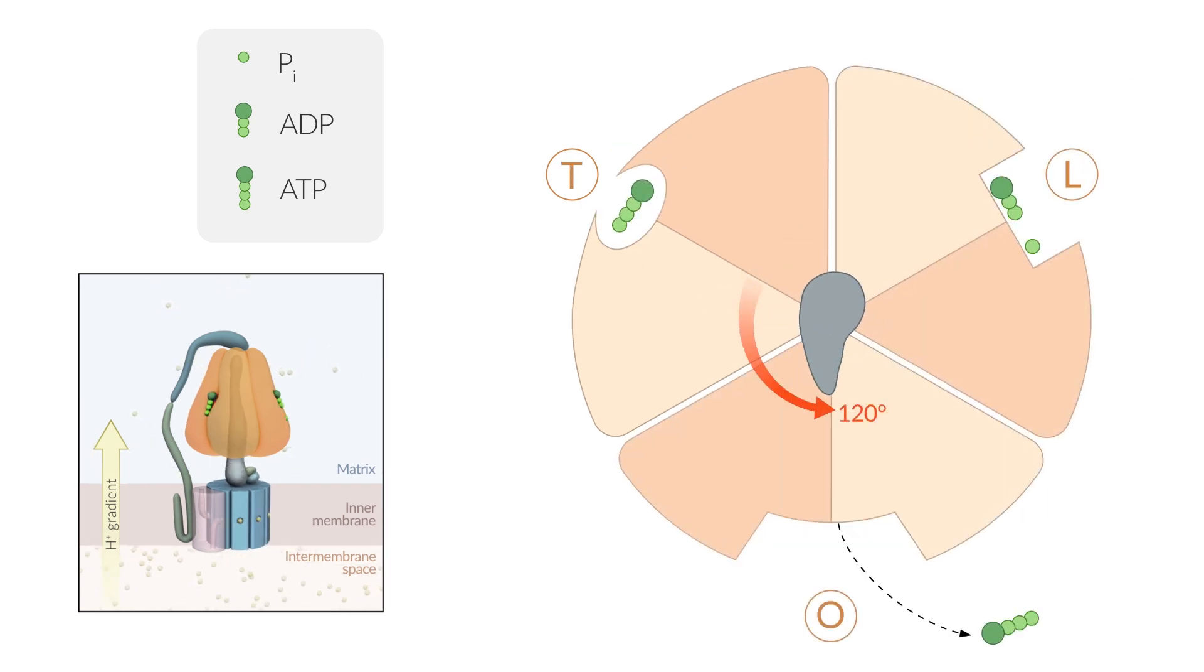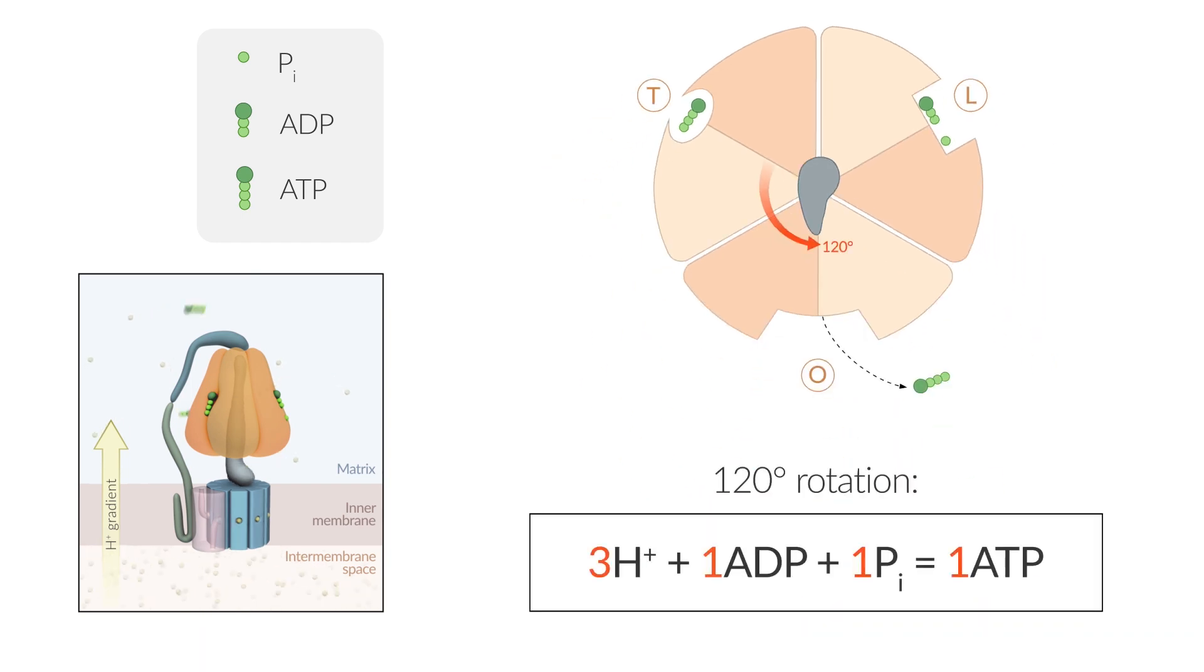In fact, the conformation of all three binding sites changes simultaneously. Therefore, three protons are required per 120-degree rotation. Ultimately, three protons need to be transported from the intramembranous space into the matrix to produce one molecule of ATP from ADP and phosphate.